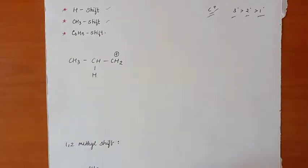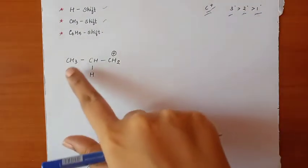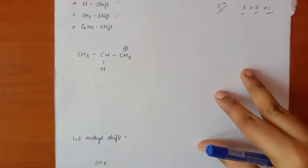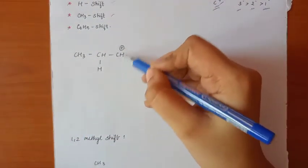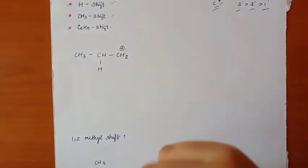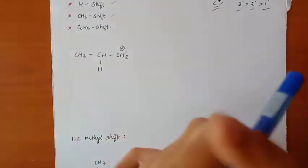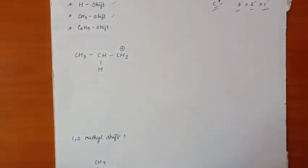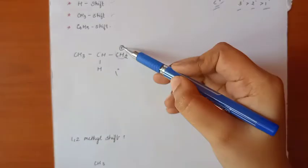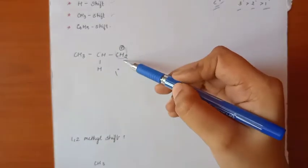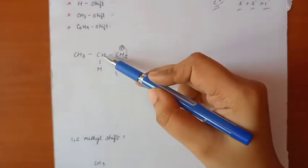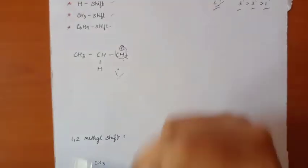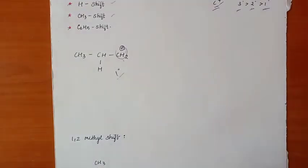First, let's look at the hydride shift. Here is a compound — this compound has a carbocation. Now, looking at the degrees: this carbon has a positive charge and is attached to only one carbon, so it is 1°. And here we have 3° and 2° positions as well.